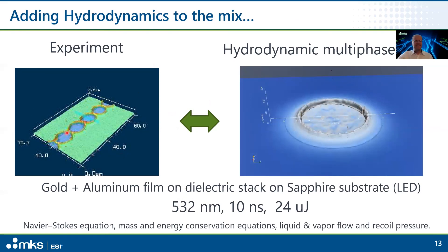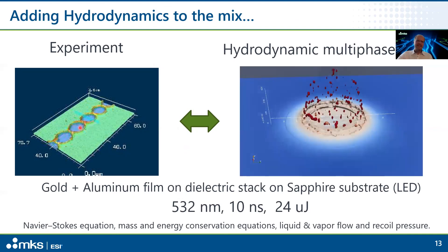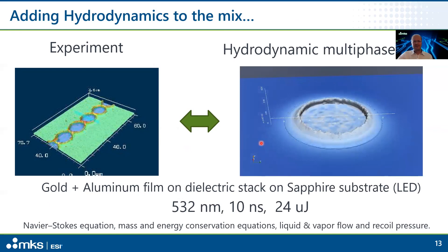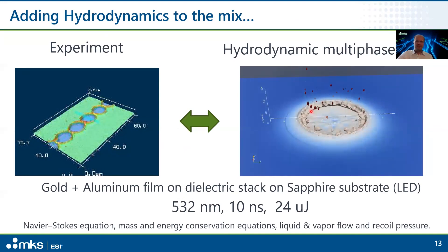On the left we have an LED substrate — a gold and aluminum film on a dielectric stack. With each pulse, you remove material nicely in the center and create a rim around it, which is impossible to reproduce with a thermal model alone. Once you include the Navier-Stokes equations and consider the recoil pressure generated by vapor flow, you can actually look at droplet formation as well as this rim formation.